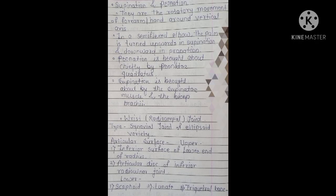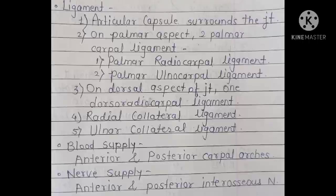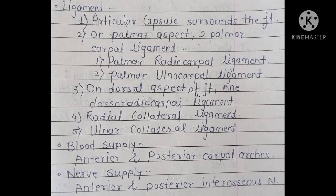The wrist or radiocarpal joint is a synovial joint of the ellipsoid variety. Articular surfaces: on the upper side — the inferior surface of the lower end of the radius and the articular disc of the inferior radio-ulnar joint; on the lower side — the scaphoid, lunate, and triquetral bones. Ligaments include the articular capsule surrounding the joint; on the palmar aspect — the palmar radiocarpal ligament and palmar ulnocarpal ligament; on the dorsal aspect — one dorsal radial ligament; and the radial and ulnar collateral ligaments. Blood supply is from the anterior and posterior carpal arches.